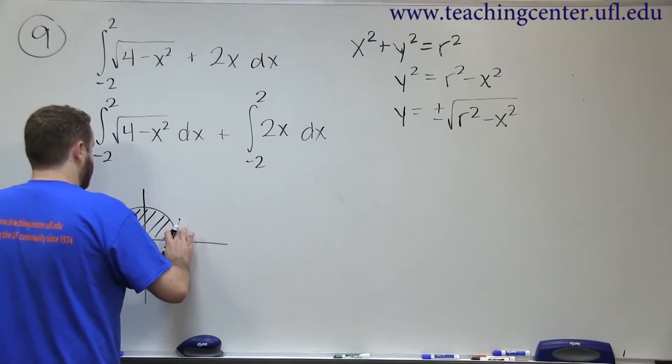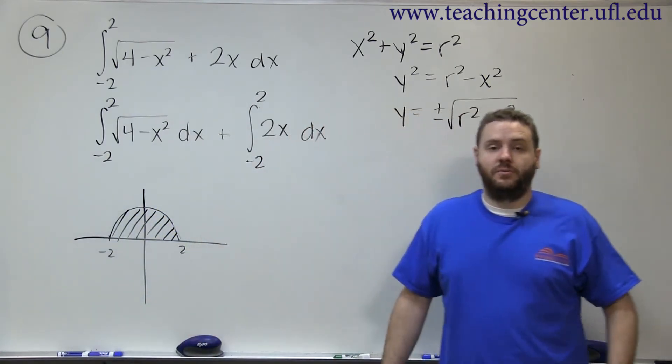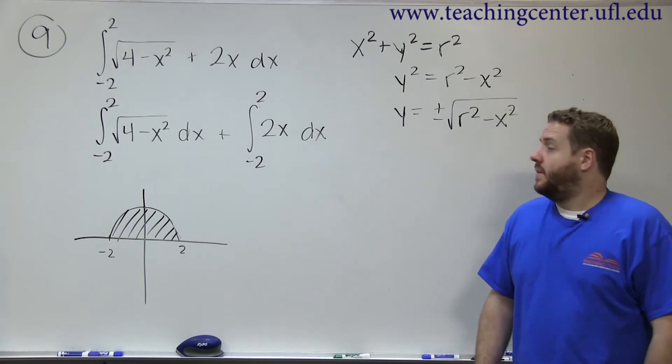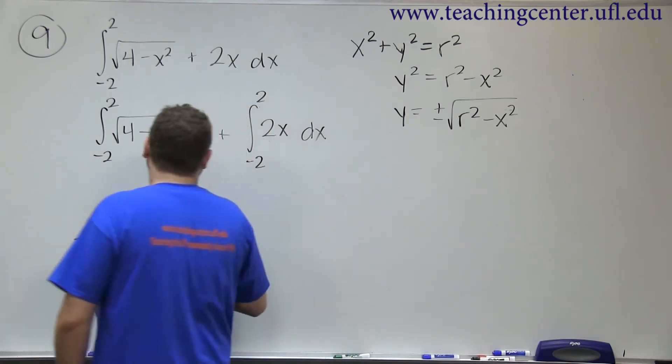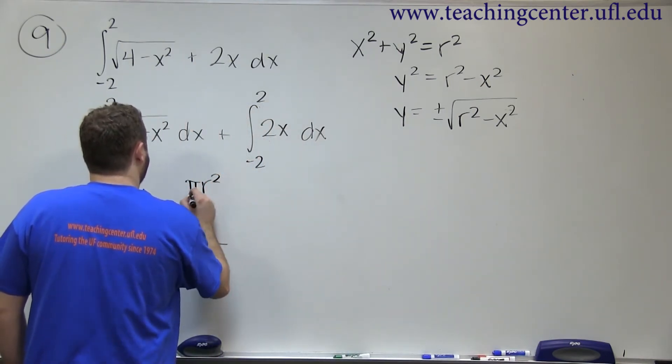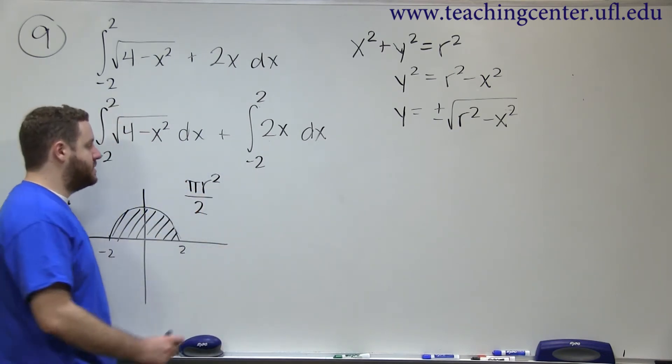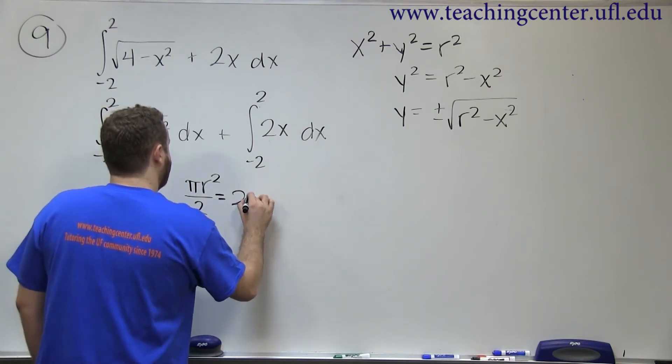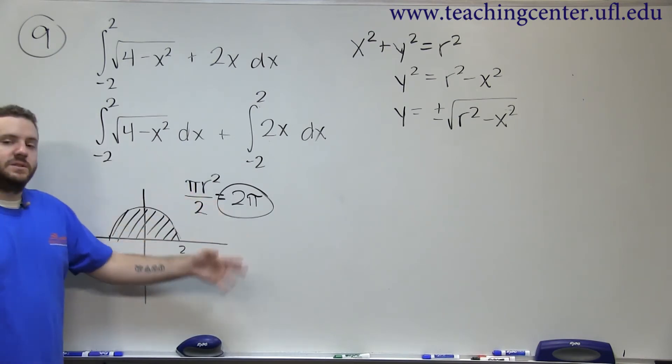Like I said, in calc 1 we don't have the tools to actually do this antiderivative, but we can do that pretty simply because we know the area of a circle. The area of a circle is pi r squared. We only have half of one. So we're just going to do pi r squared over 2, and we know that our r is 2. So if r is 2, this would be 4 pi over 2, which is 2 pi. So this part of the definite integral results in 2 pi.